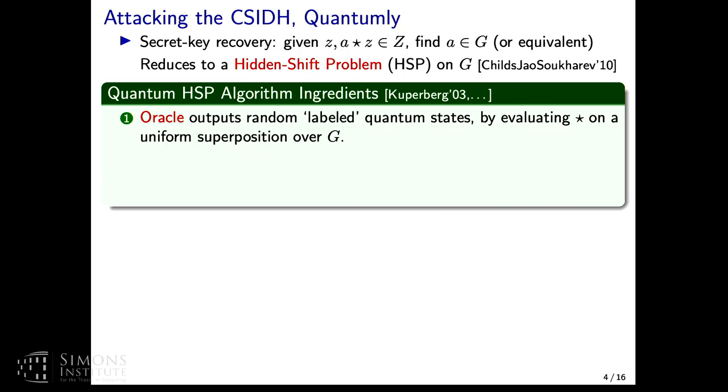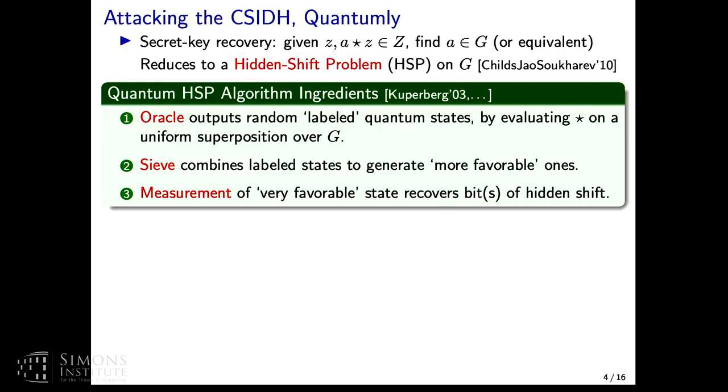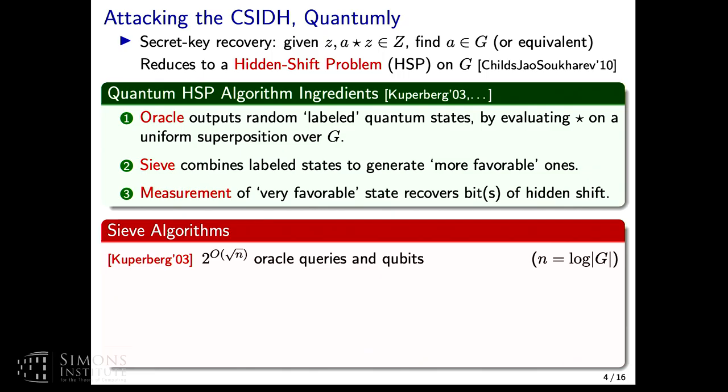What can we do with hidden shift? Starting with Kuperberg in 2003, there are these algorithms that will solve hidden shift problems quantumly. The basic structure of these algorithms is that we have some kind of oracle which is going to output these random labeled quantum states. You get a quantum state and you get some label that the oracle gives you. The oracle does this by evaluating the group action on some uniform superposition over the group. Then there's some sieve algorithm which will combine these labeled states in various ways intelligently to generate somehow more favorable states or nicer states.